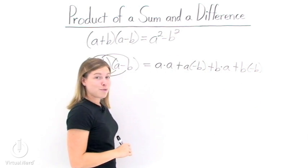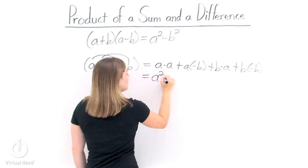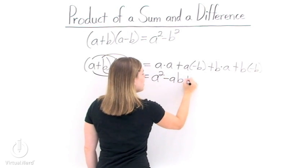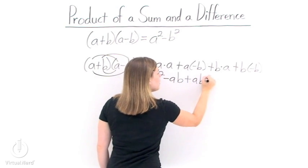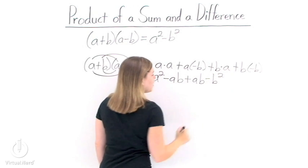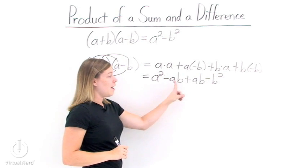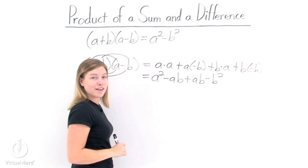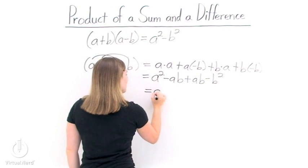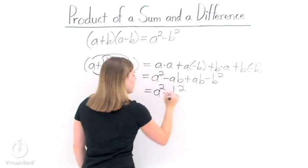Now we need to simplify. We get a squared minus ab plus ab minus b squared. Notice these middle two terms are the opposites of each other, negative ab and positive ab. Well, those cancel each other out, and we're left with a squared minus b squared.